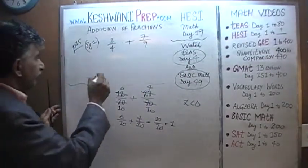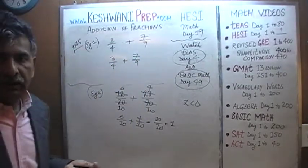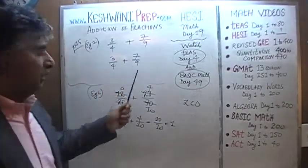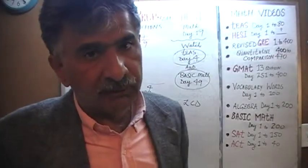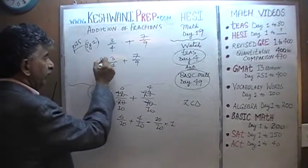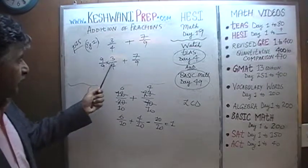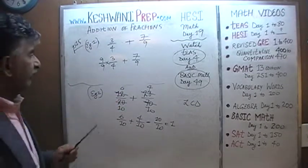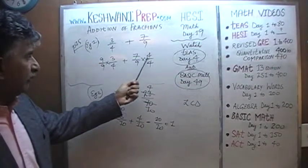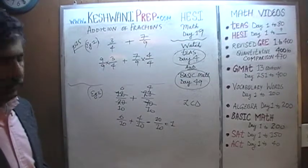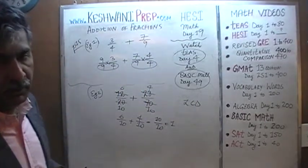How do we find that? It's very simple. We have 3 over 4 and 7 over 9. As you can clearly see, 4 and 9 share no factors in common, so the simplest way to find the LCD is to multiply the first fraction by 9 over 9. We are not changing anything — 9 over 9 is just 1. Similarly, we take 7 over 9 and multiply top and bottom by 4 over 4. Again, we have not changed anything because 4 over 4 is 1. Now we can clearly see we have a common denominator: 9 times 4, which is 36. Now that the denominators are the same, we are home free.